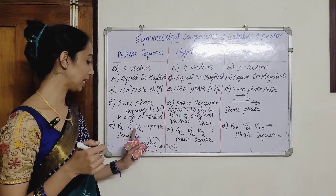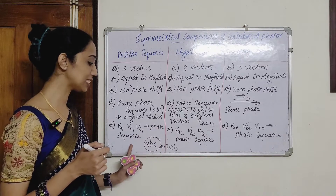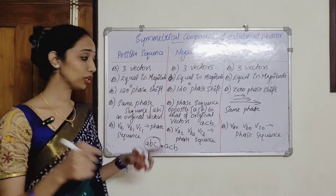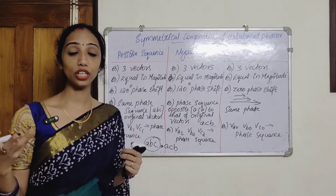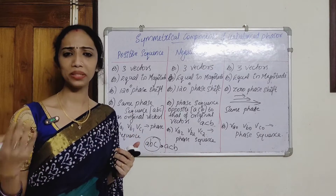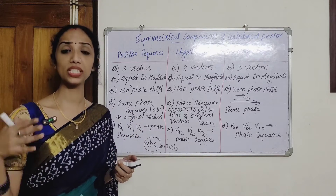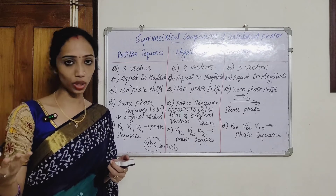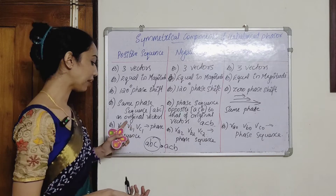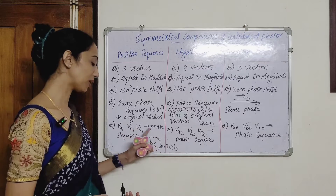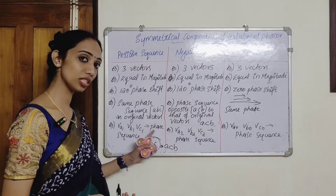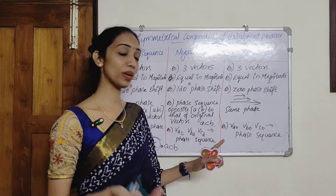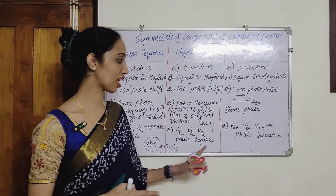VA1, VB1 and VC1 are the positive phase sequence components. We are using positive sequence notation: VA1, VB1, VC1 for positive phase sequence. And VA2, VB2, VC2 for the negative phase sequence.